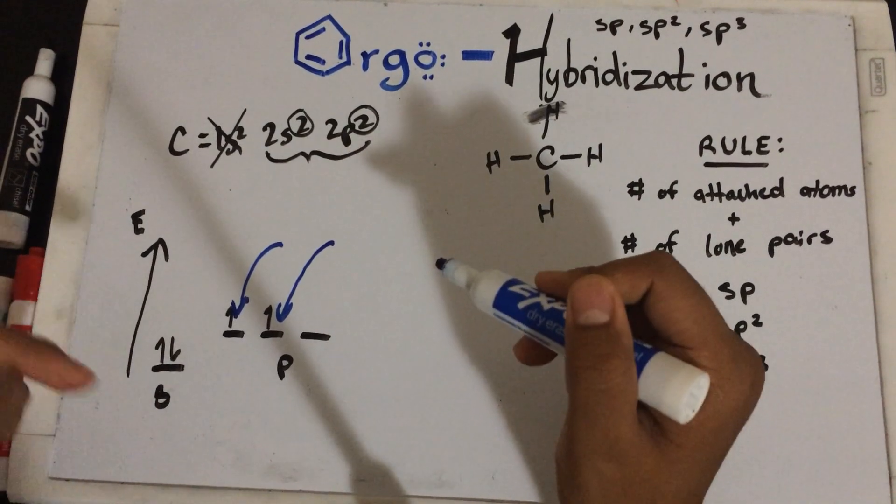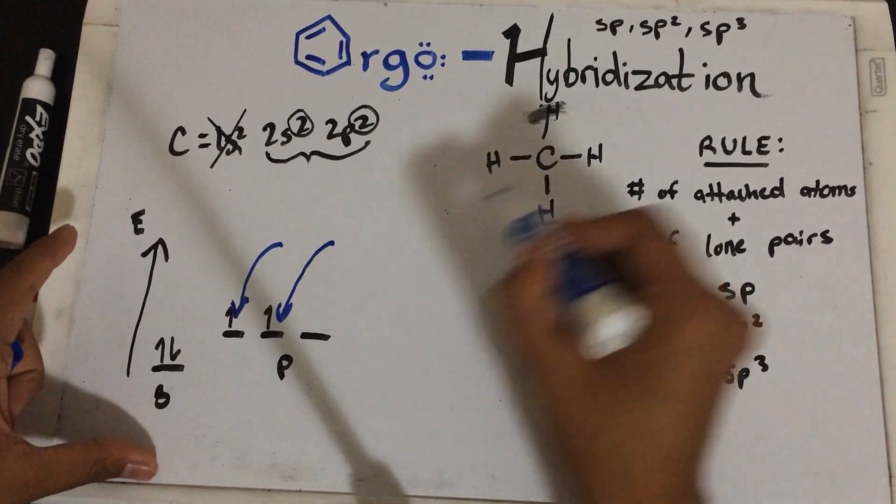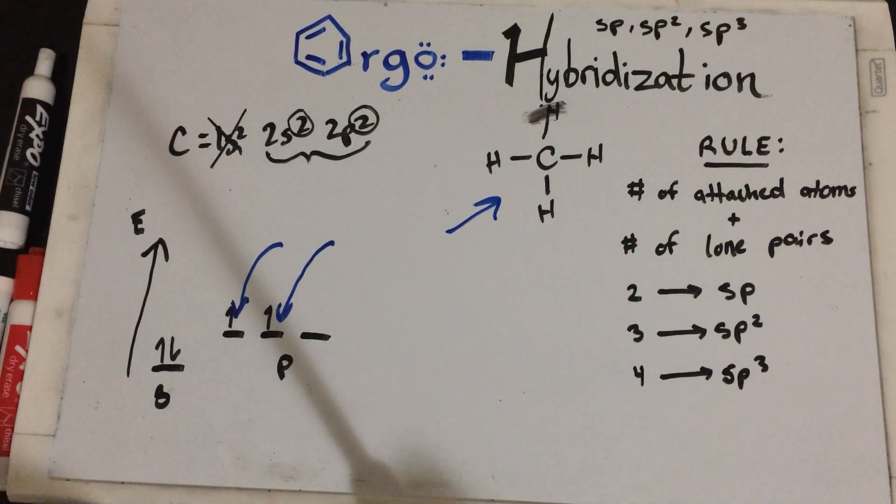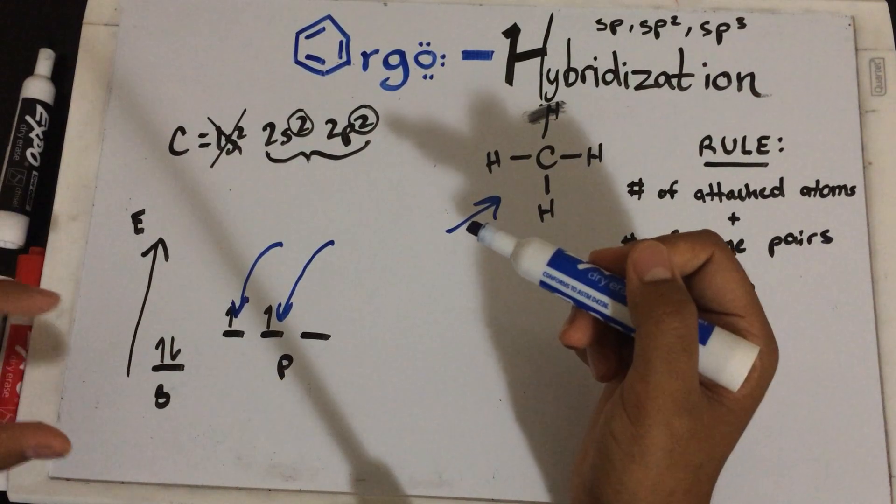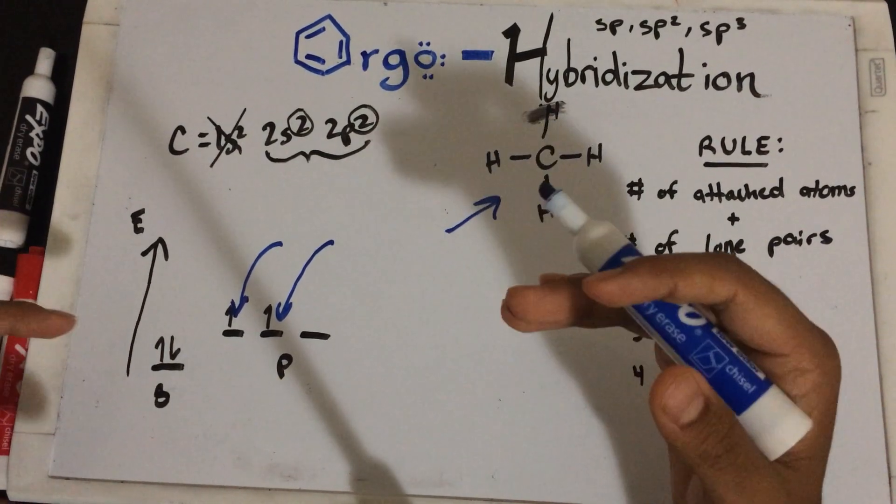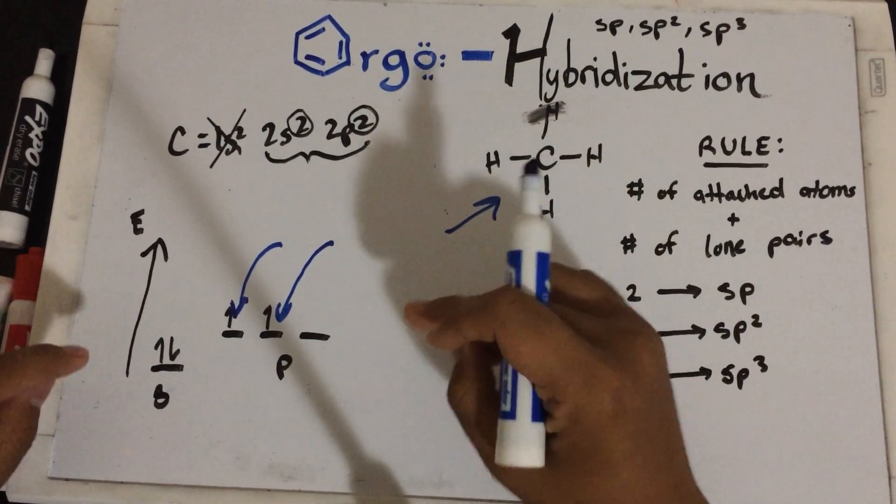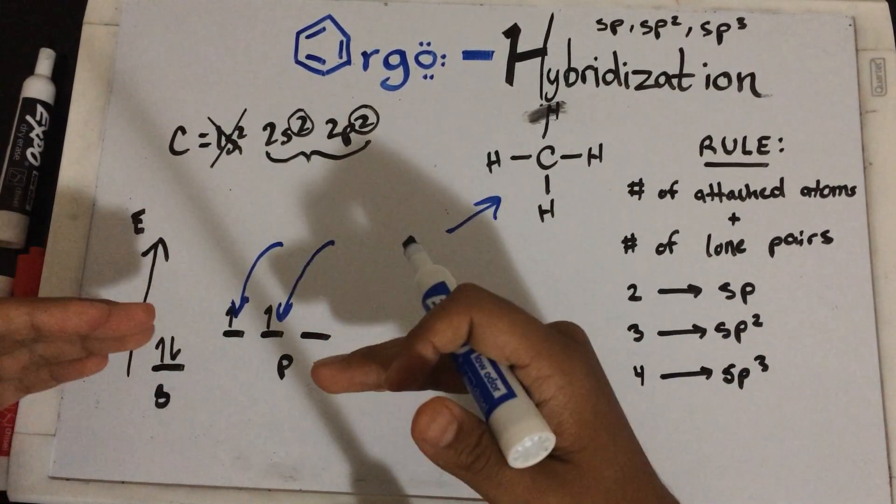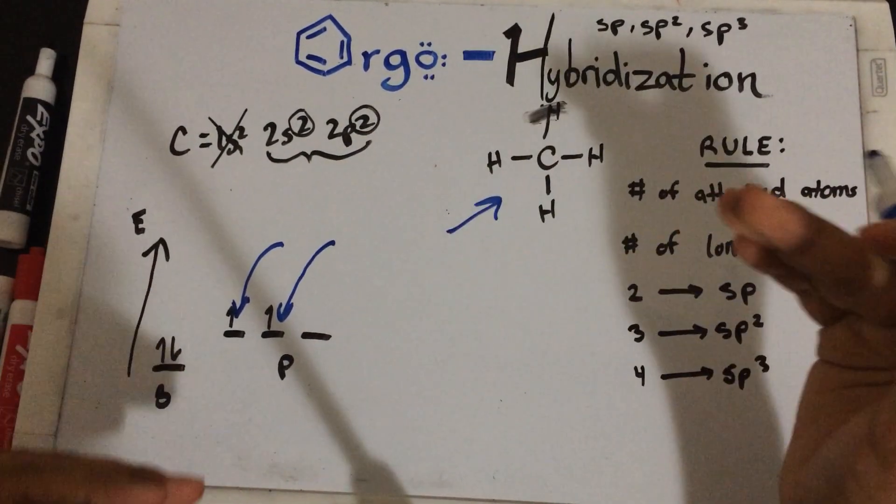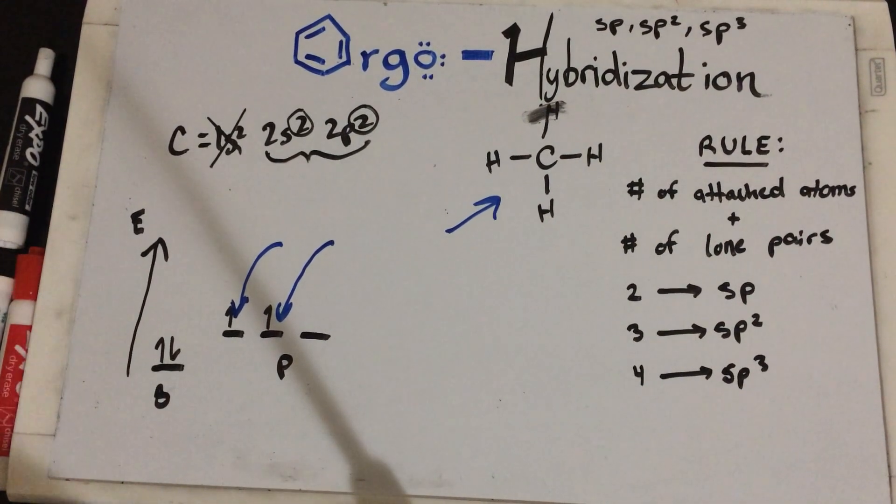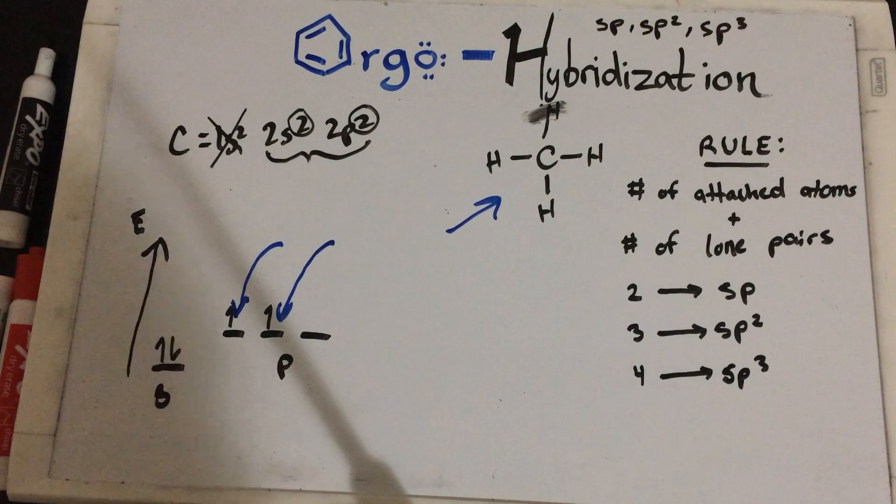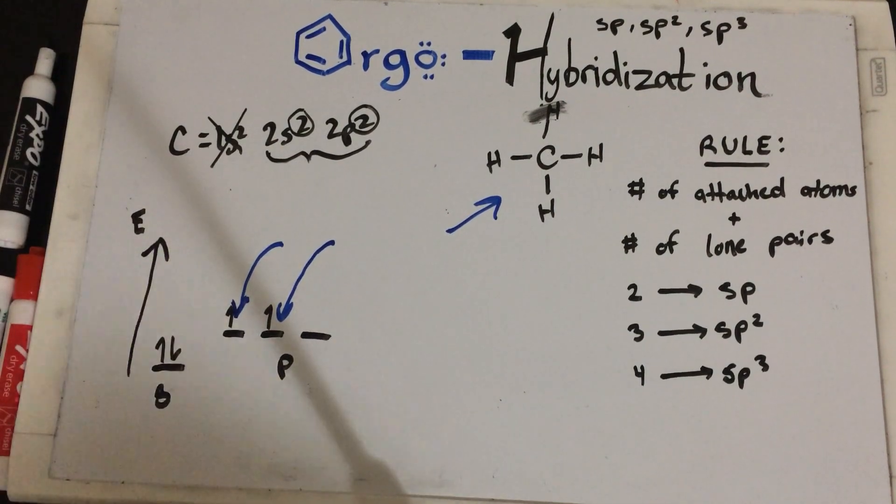But we want to make carbon be able to make four bonds, as I showed you right over here. So how do we get to that point? This is where the hybridization comes in. There will be some energy that's required, and that energy will take this S and the p orbital, and combine them, which will put carbon in such a state where it can make four bonds. Now, I know this sounds confusing, so let me show you what I'm talking about, and it'll make sense.